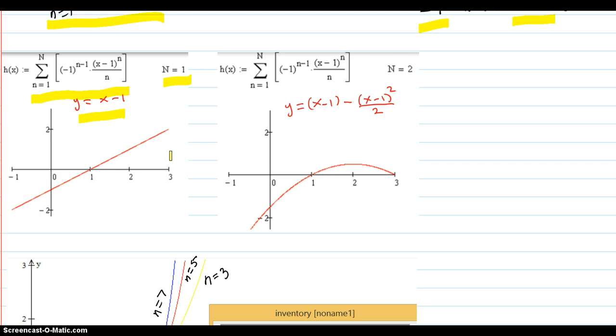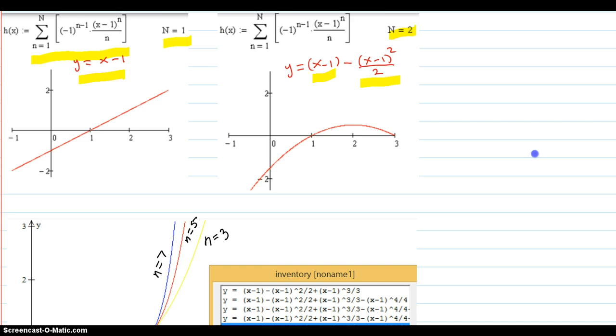For n equals 2, it's the sum of the terms for n equals 1 and n equals 2. So you get this one and you get that one, and you continue on like that.